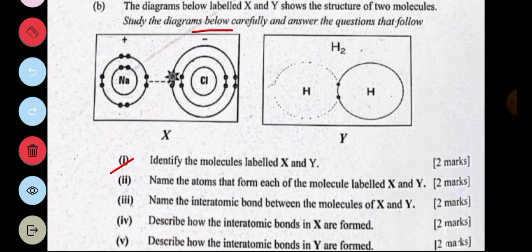Part I is asking us to identify the molecules labeled X and Y. The molecule in X is sodium chloride, NaCl. And the molecule in Y is hydrogen gas, H2.